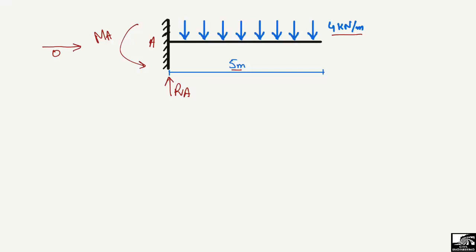To find RA, it will be equal to the total load acting on the beam. The total load is the uniformly distributed load of 4 kilonewton per meter multiplied by the distributed length of 5 meters — the units cancel, giving us 20 kilonewton. This 20 kilonewton is the total load acting on the beam, which is resisted entirely by the fixed support, so RA equals 20 kilonewton.